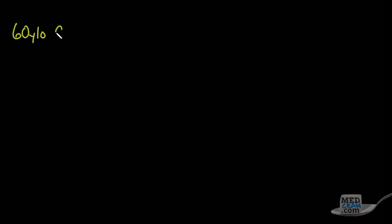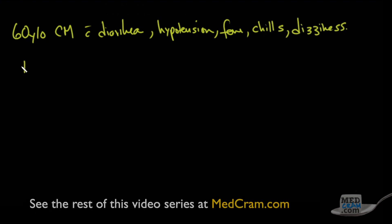We have a 60-year-old Caucasian male who presents with diarrhea and hypotension, fever, chills, and dizziness.